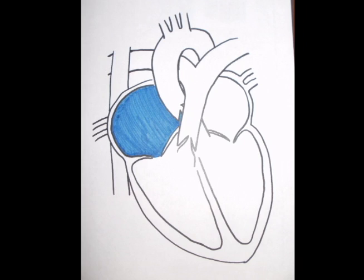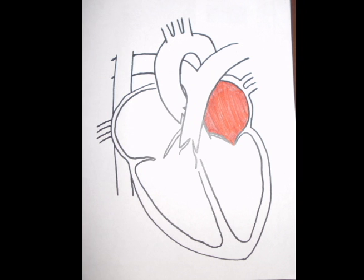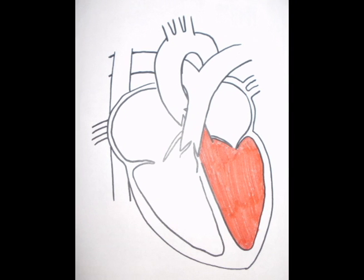The heart itself is made up of four different chambers. On top you have your right and left atria, and on bottom you have your right and left ventricles.